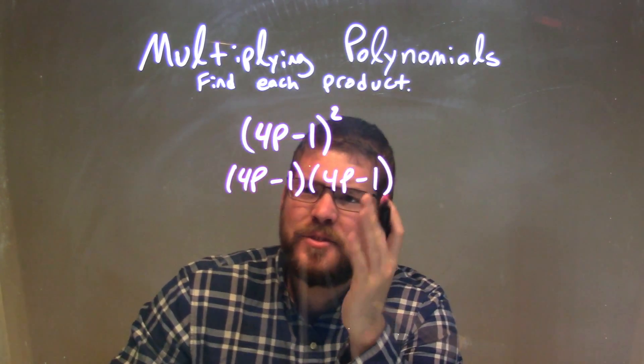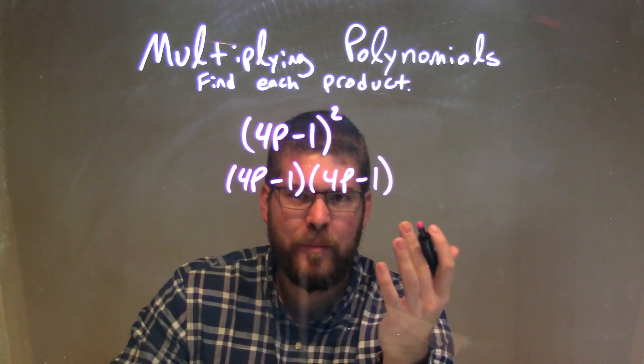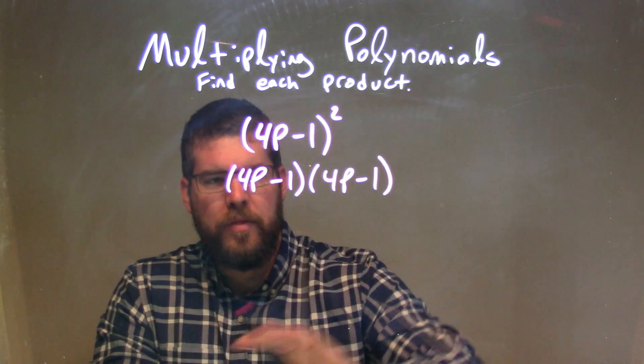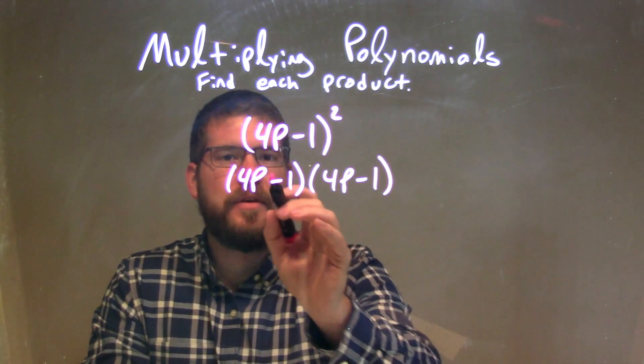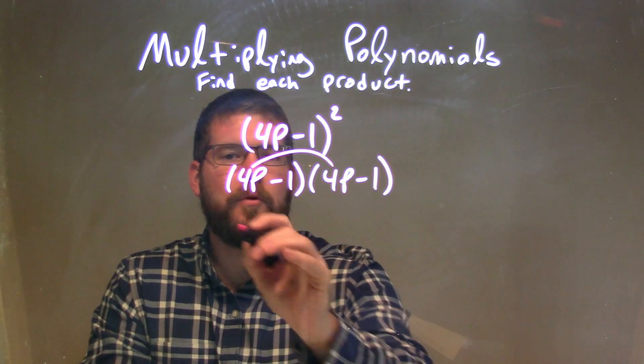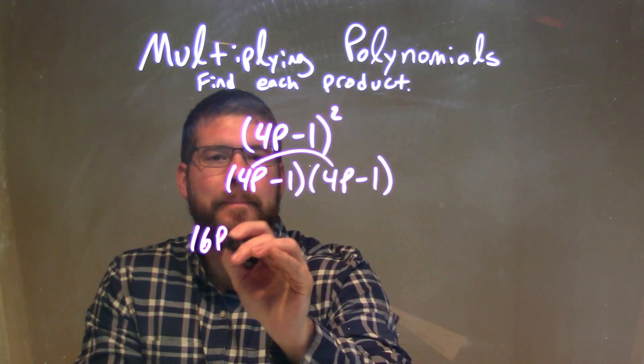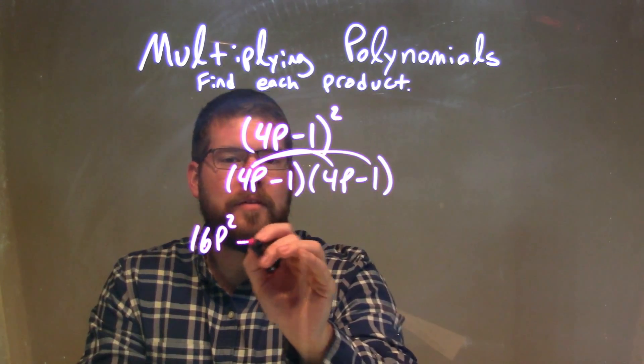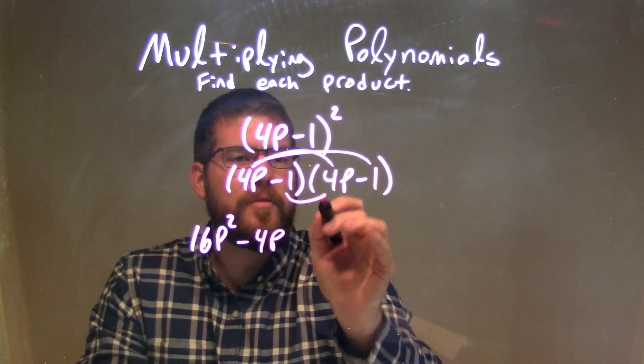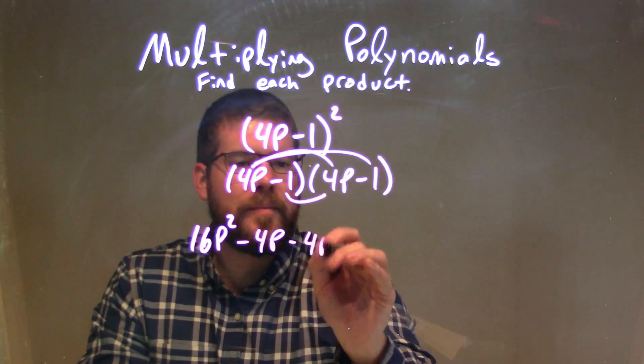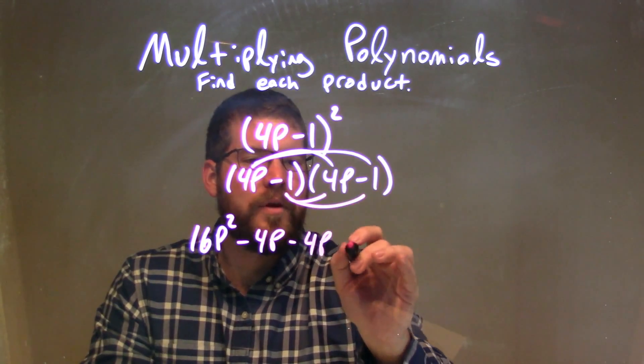Now I can solve it just like any other polynomials we've been multiplying—all parts of the first parenthesis by all parts of the second parenthesis. Let's draw our arcs. 4p times 4p is 16p². 4p times -1 is -4p. -1 times 4p is -4p. And -1 times -1 is +1.